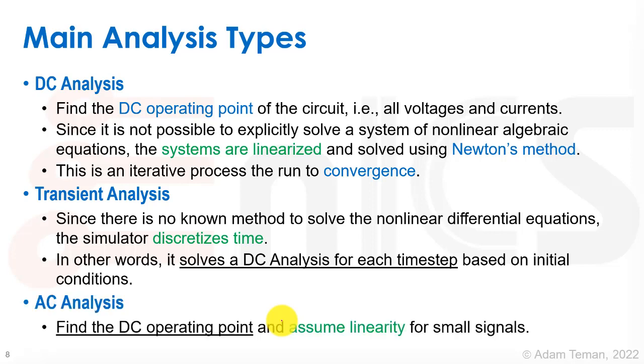And the other third main analysis type is AC analysis, where again, what we're going to do is we're going to find the DC operating point and then assume linearity for small signals. Now in this talk, I'm going to be discussing mainly DC and transient analysis because I come from the digital world and I don't do many AC or noise or RF analysis, but obviously you can go and expand your knowledge towards all of these. The concepts I'm going to discuss here, they affect all of these and they're even more important for the analog and RF designers and so forth.